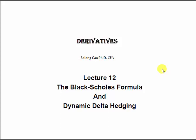Lecture 12 is about the Black-Scholes formula and dynamic delta hedging. In our textbook, the Black-Scholes formula is introduced and discussed in chapter 12, but dynamic delta hedging is actually in chapter 13. So this last lecture will cover some materials from both chapter 12 and chapter 13 in our textbook.